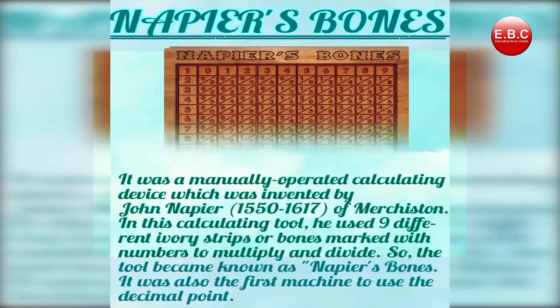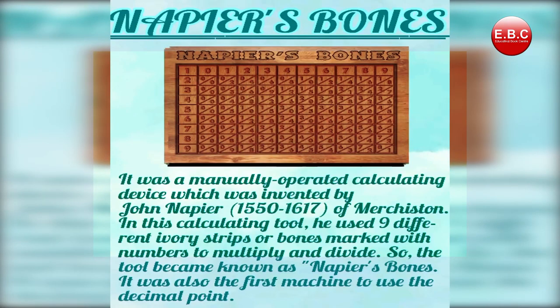Next is Napier's Bone. It was a manually operated calculating device which was invented by John Napier (1550 to 1617). In this calculating tool, he used 9 different ivory strips or bones marked with numbers to multiply and divide. The tool became known as Napier's Bone. It was also the first machine to use the decimal point.